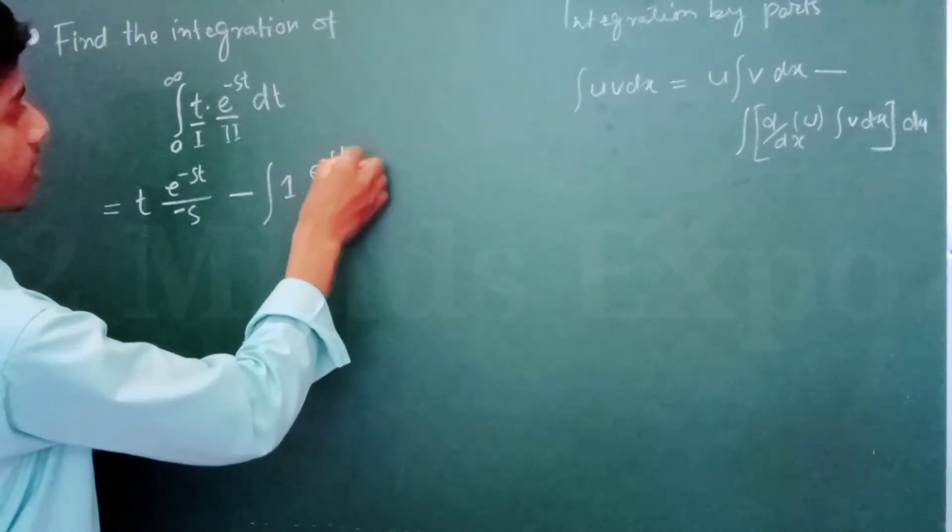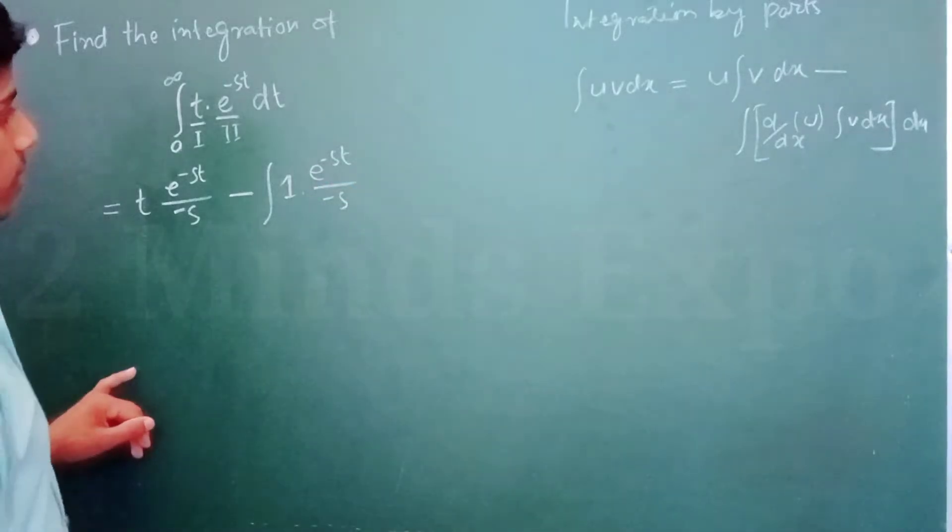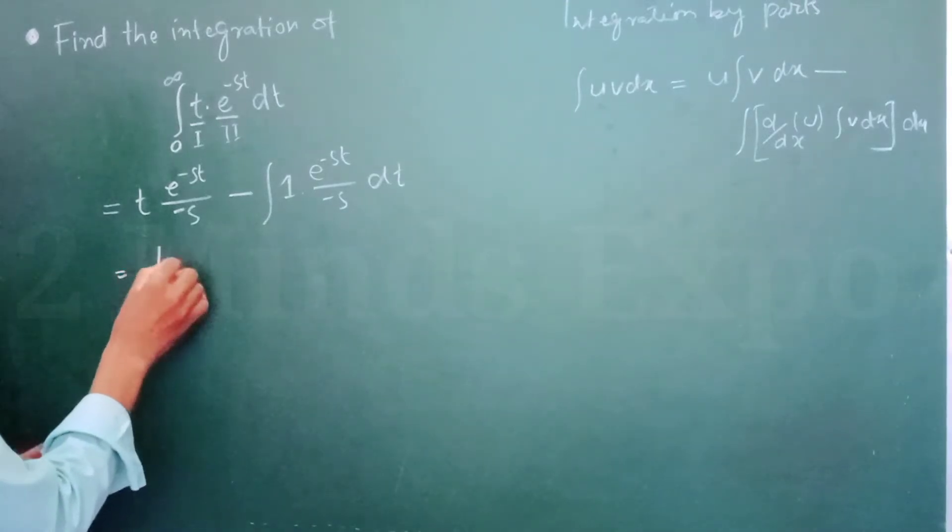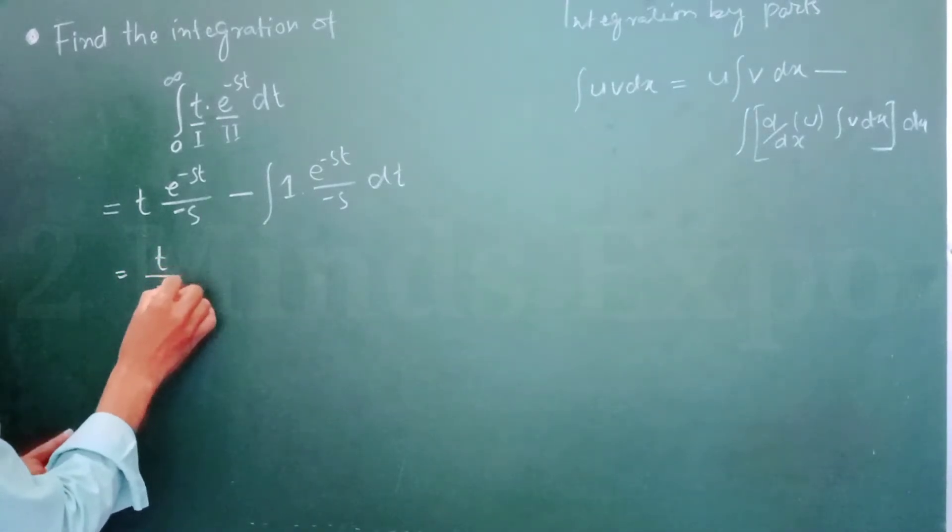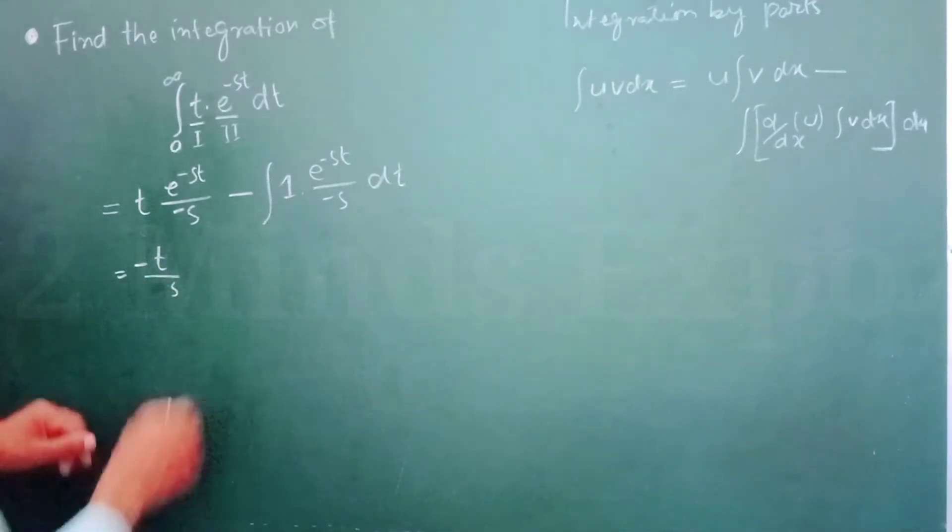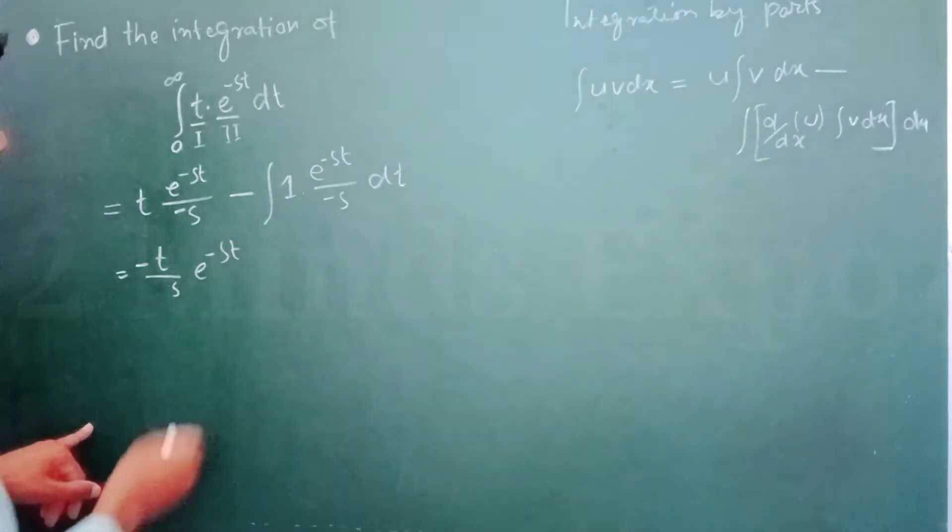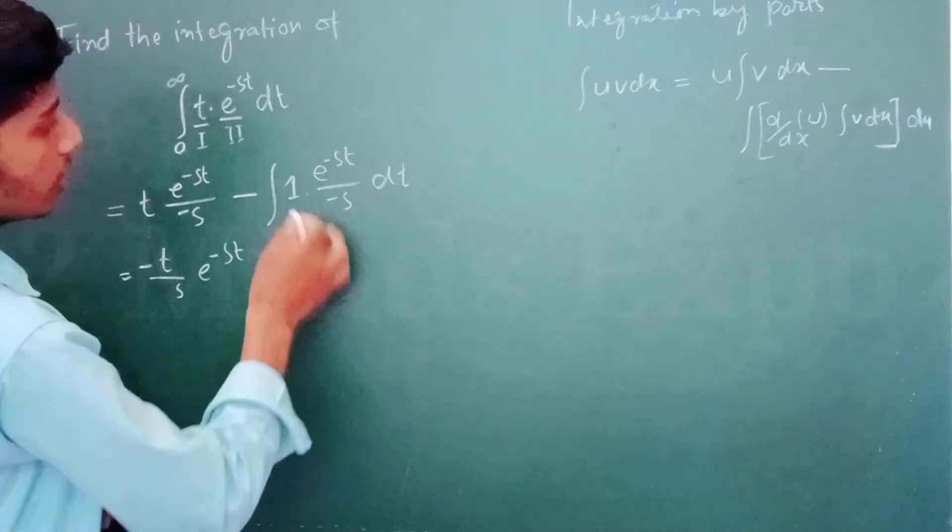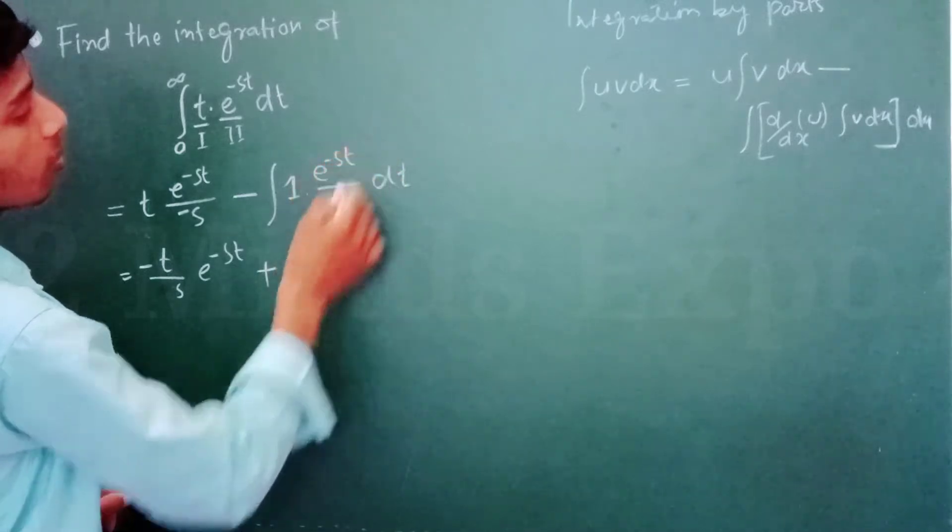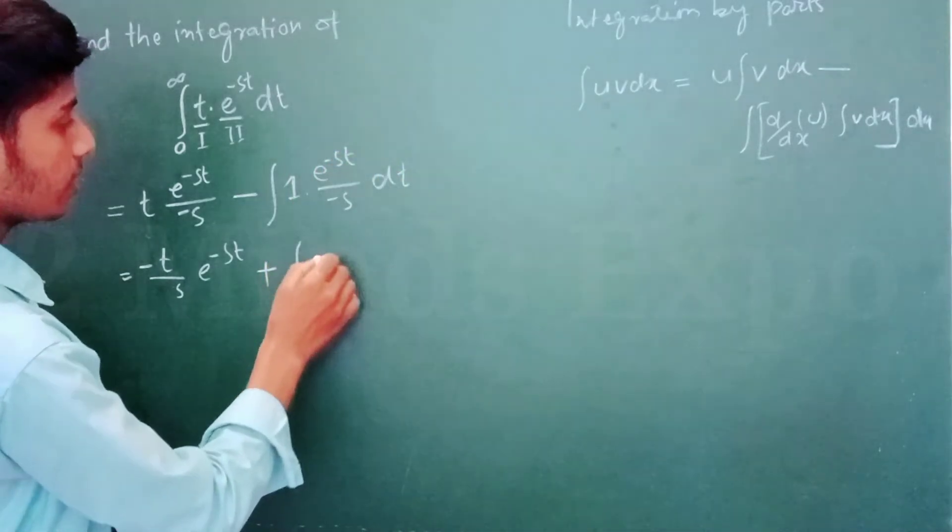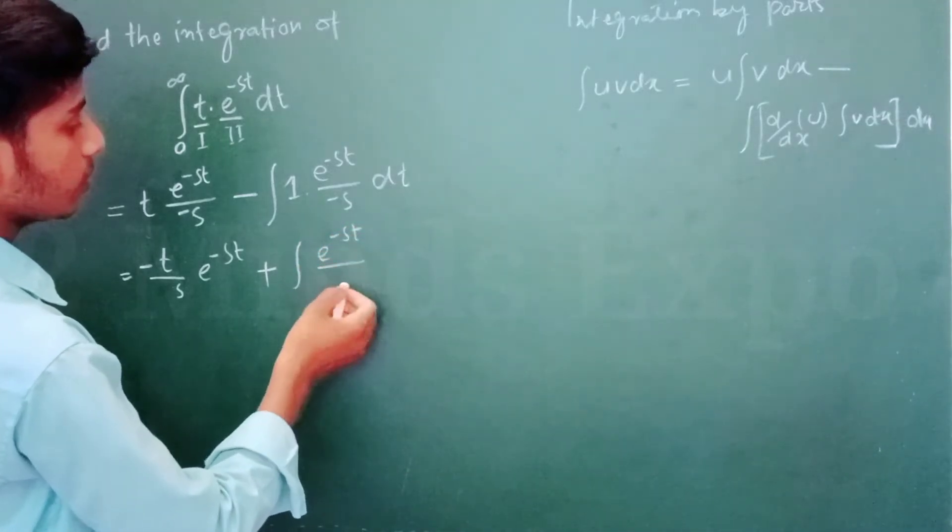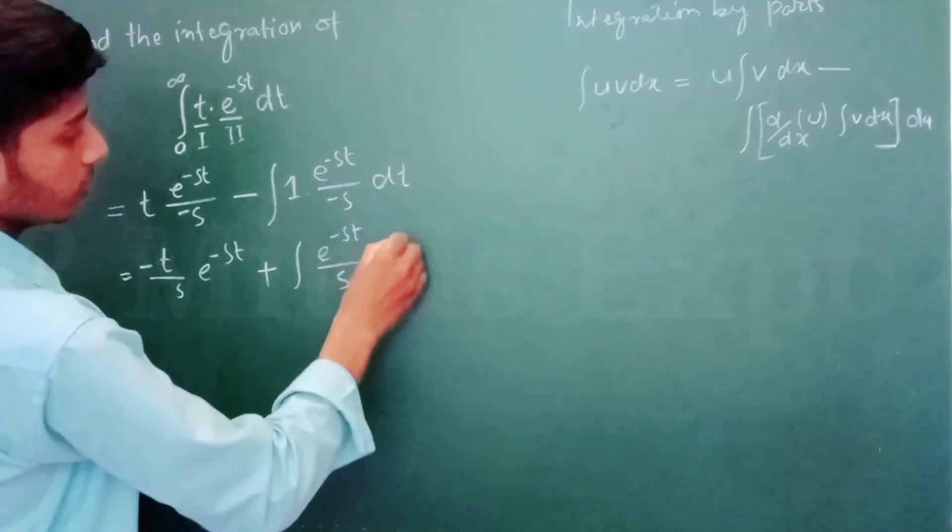So here we can write T by minus S, or you can write minus T by S, e to the power minus ST, minus minus and minus will be plus. Integration of e to the power minus ST divided by S dT. We can write like that: e to the power minus ST divided by S dT.